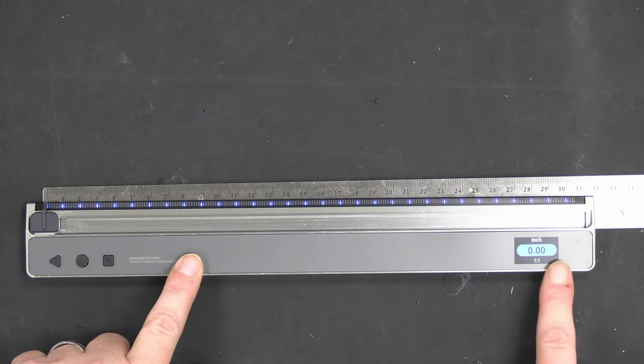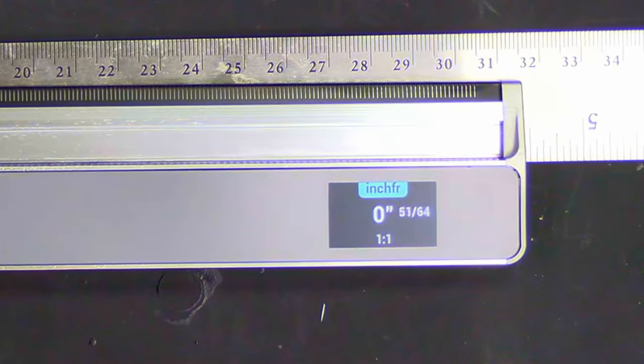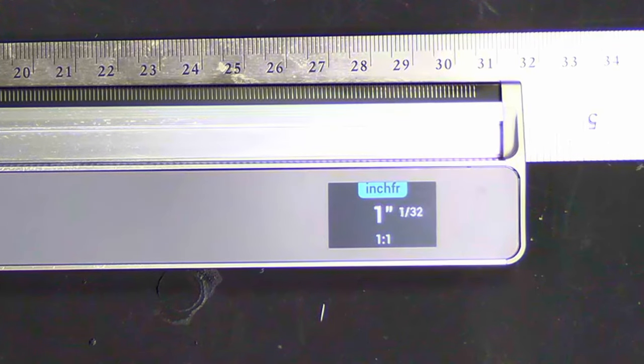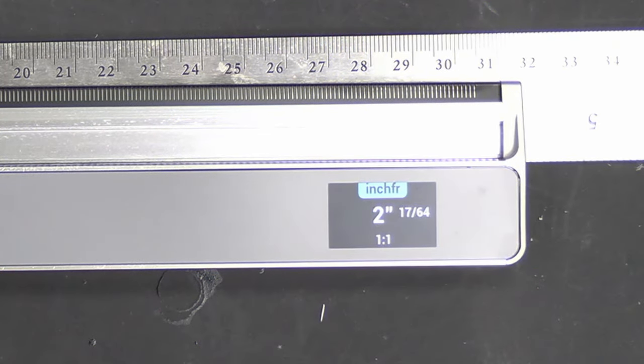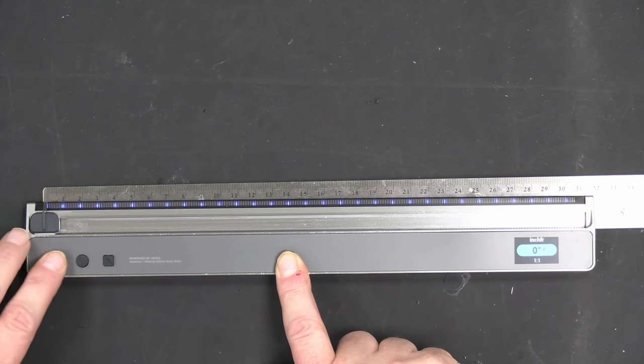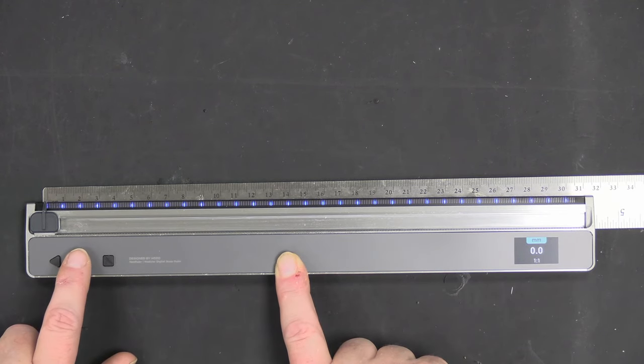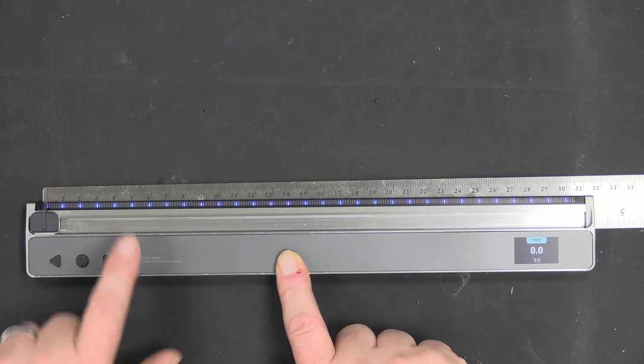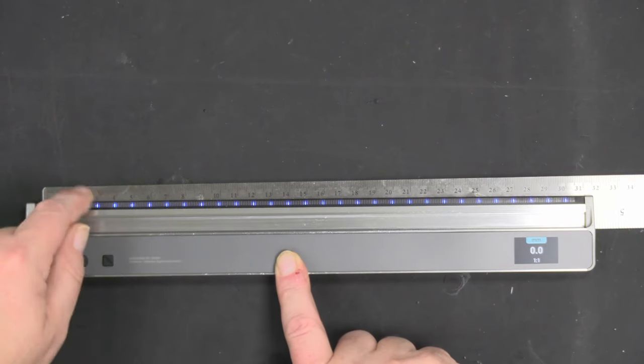So we're zeroed out now. We're going to move this up and now it measures you in fractions. We'll go to there - two and three sixteenths. Pretty cool. Now we're going to bring this back down here, zero it out, and switch to millimeters, which is where we want to be. I want to show you millimeters because this steel rule is graduated in millimeters.